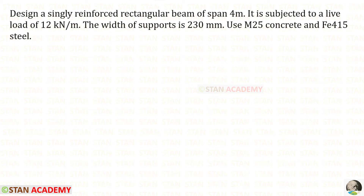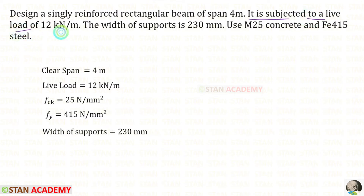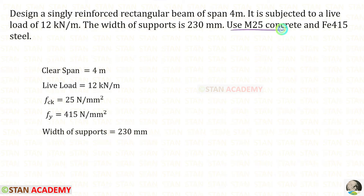Hello everyone. Today, we are going to design a singly reinforced rectangular beam. Let us read the question and write the given data. Design a singly reinforced rectangular beam of span 4 meter. The clear span is given as 4 meter. It is subjected to a live load of 12 kilonewton per meter. The width of the supports is 230 millimeter. Use M25 concrete and Fe415 steel. FCK is 25 and Fe415.